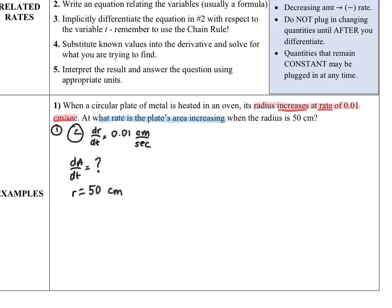Step two: write an equation relating the variables. The problem talks about area, a circular plate, and a radius, so I'll use the area of a circle formula: A = πr². Step three: find the derivative of that formula with respect to t. I have the variable r here, so the chain rule comes in — implicit differentiation. Treating r as the inside function, I bring the two down: dA/dt = 2πr · (dr/dt), because r is not the independent variable and requires that extra chain rule step.